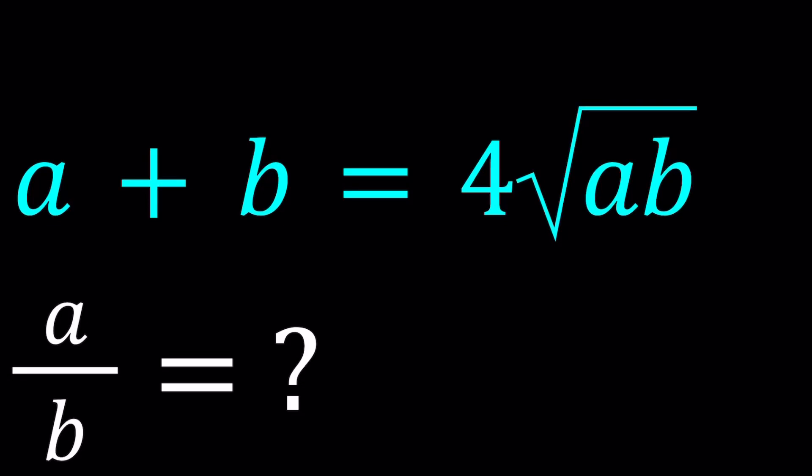Hello everyone. In this video, we're going to be solving a nice algebra problem. We have A plus B equals 4 times the square root of AB, and we're going to evaluate the ratio A over B. I'll be presenting two methods, and let's get started.